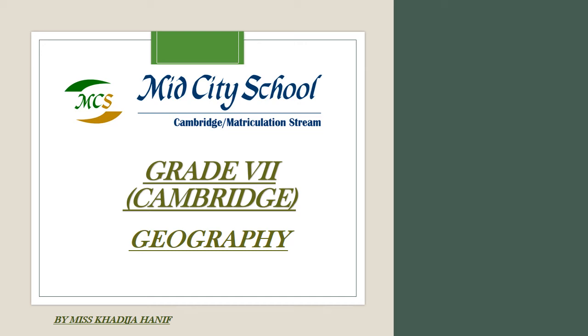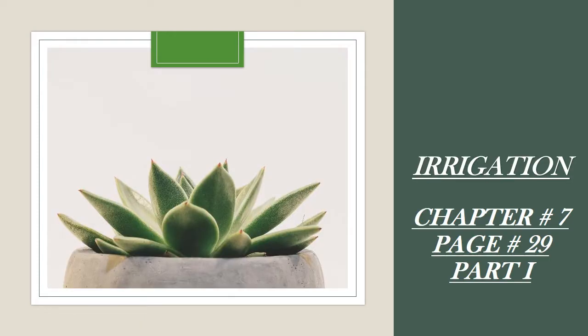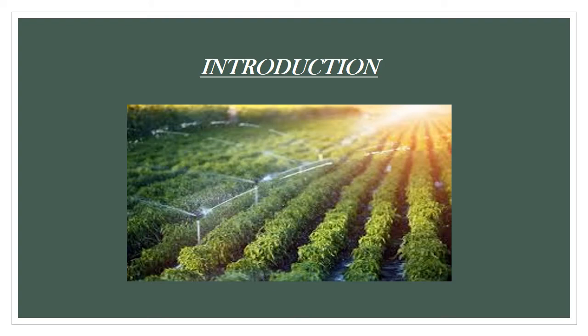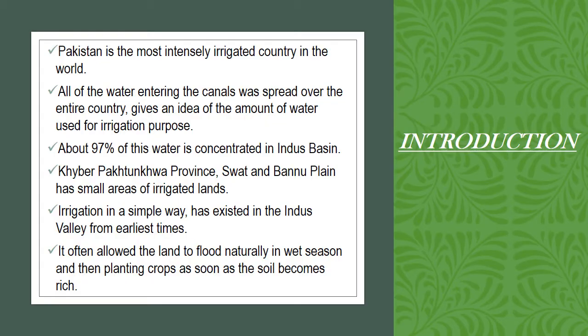Assalamualaikum students, today we will start with our third chapter that is irrigation on page number 29 in your book. This is part 1 of it. Let's see the introduction first. It states that Pakistan is the most irrigated country in the world, and the water that entered into the canals covered the whole country.